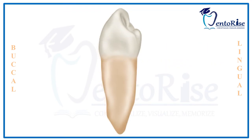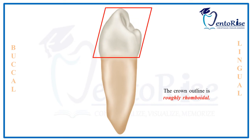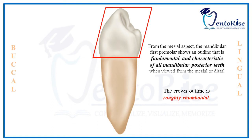The second heading would be the shape of the crown from this aspect. As we can see in the figure, the crown outline is roughly rhomboidal. This shape is fundamental and characteristic of all the mandibular posterior teeth when viewed from the mesial or the distal aspect.